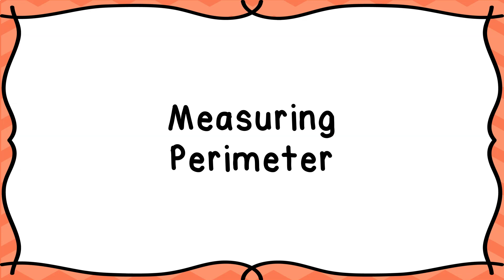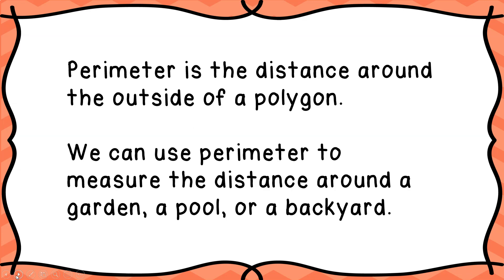Let's talk about measuring perimeter. Perimeter is the distance around the outside of a polygon. Remember, a polygon is a shape that has all straight sides and it has to be closed. So a square is a polygon, a rectangle is a polygon, a triangle is a polygon. A circle is not, and if you just squiggle on your paper, also not a polygon.